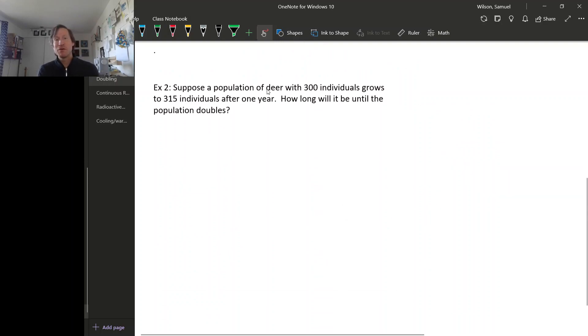For example, suppose we have a population of deer with 300 individuals that grows to 315 individuals after one year. How long will it be until the population doubles? So we have two data points here. At year 0 we have 300 individuals and at year 1 we have 315 individuals. So we could find an exponential function that goes through these two points and then use that function to figure out how long it takes until the population doubles.